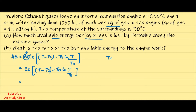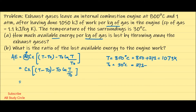Here T is 800 degree Celsius, which converts to 1073 Kelvin, and T0 is 30 degree Celsius, which converts to 303 Kelvin. The Cp of gas is given as 1.1 kJ/kg·K. So I will write: 1.1 × [(1073 - 303) - 303 × ln(1073/303)].